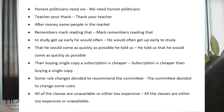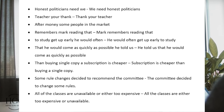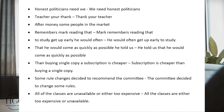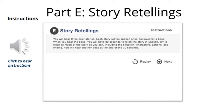Let's move on to our next section: Part E, Story Retelling. This section is similar to what we have in non-voice versant. You will hear three short stories. Each story will be spoken once, followed by a beep. When you hear the beep, you will have 30 seconds to retell the story in English. Let me share a simple story: 'At a party yesterday, there was a big cake for a big crowd. When the party was done, there was only one piece of cake left. A young boy and a young girl both wanted to eat it. But the boy took the piece of cake for himself, and after the girl cried, he decided to give the piece of cake to her. The boy's parents were pleased to see that.'